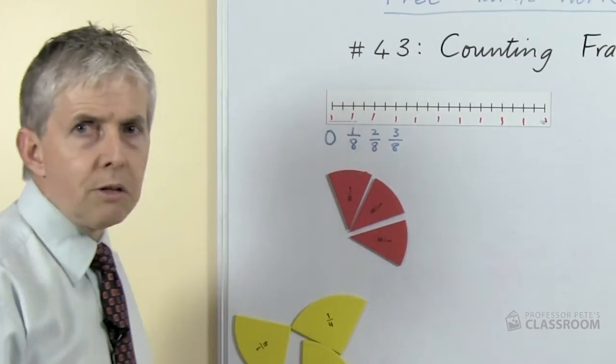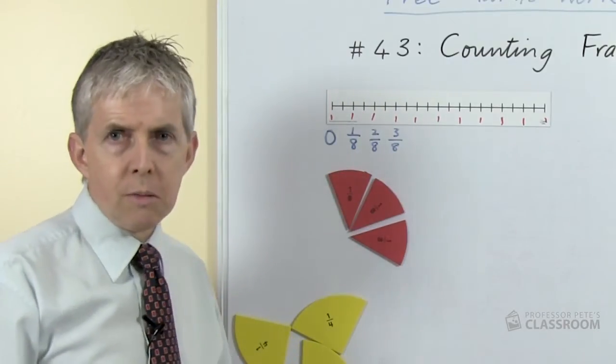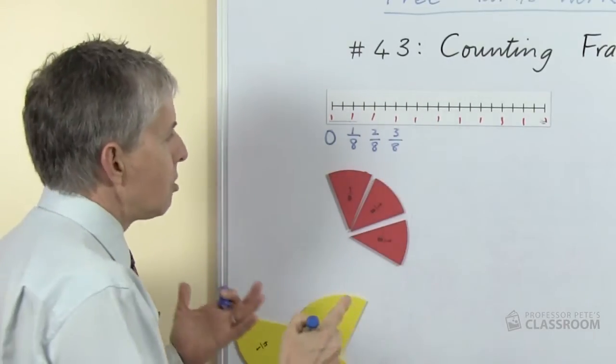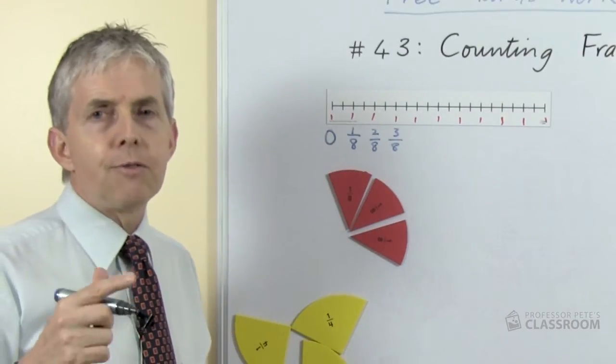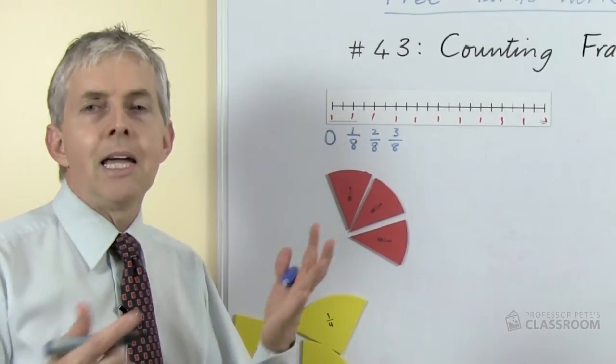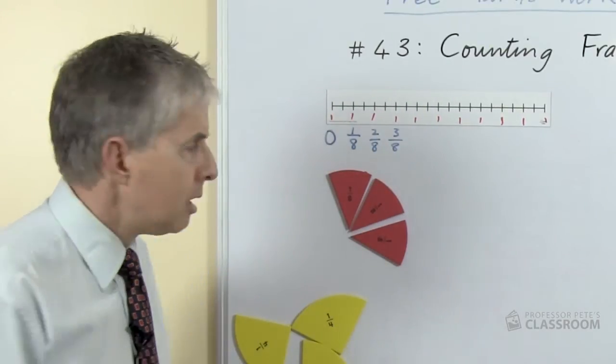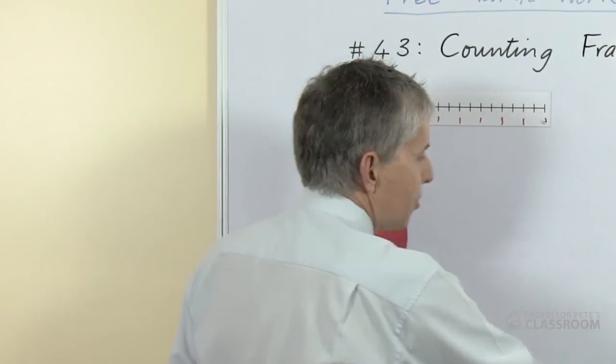When we do this the students should notice that there's something not changing here. It's the denominator of course. The eight on the bottom does not change. Why not? Because that only tells us how big the fraction is, it tells us what sort of fraction it is, it gives us the name of the fraction. That of course is where the word denominator comes from, it comes from a word meaning the name for something.